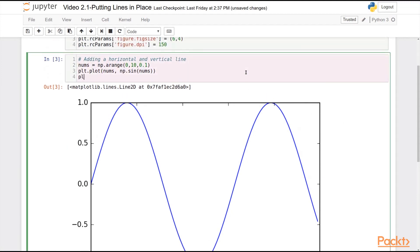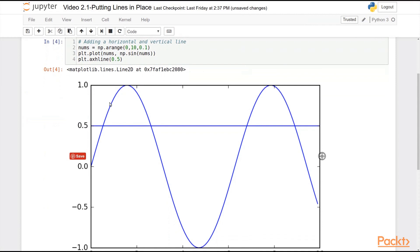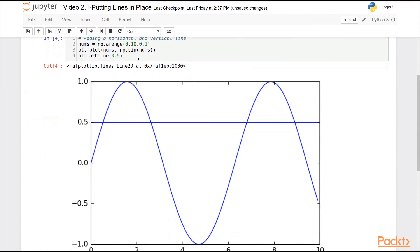So say 0.5 perhaps has real good semantic meaning in the data I'm trying to convey here. Well, I can add a horizontal line using ax.hline, ax for axis, and simply giving a value in the Y coordinate for that horizontal line. And there you can see I've drawn a horizontal line at 0.5. Now perhaps I want to color this red so that it stands out, and there you go.